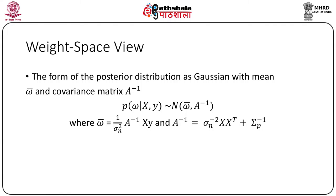Notice that φ(x)^T Σ_p φ(x') is an inner product with respect to Σ_p. Since Σ_p is positive definite, we can define ψ(x) = Σ_p^{1/2} φ(x), obtaining a simple dot product: k(x, x') = ψ(x)^T ψ(x'). If an algorithm is defined solely in terms of inner products in input space, then it can be lifted into feature space by replacing occurrences of those inner products with k(x, x'). This is sometimes called the kernel trick.